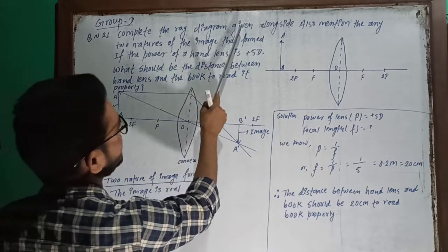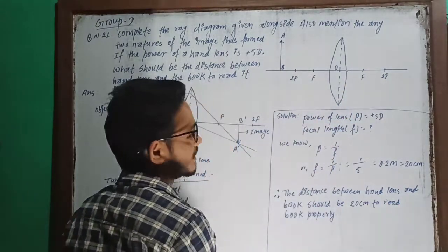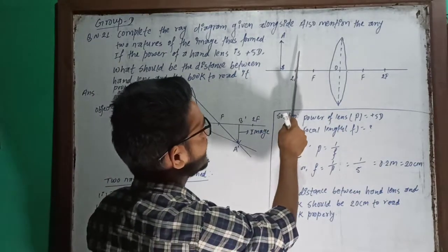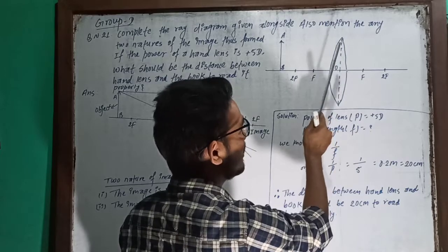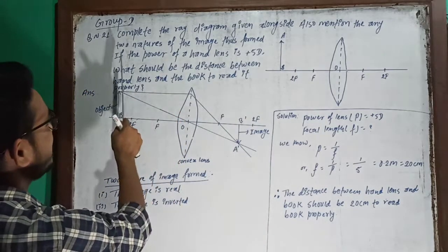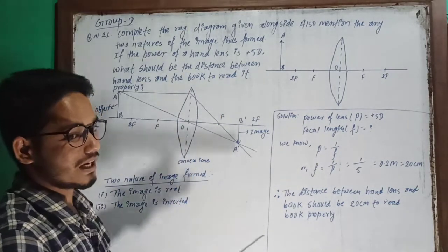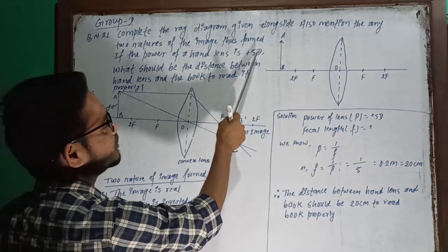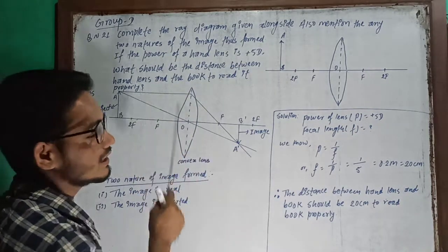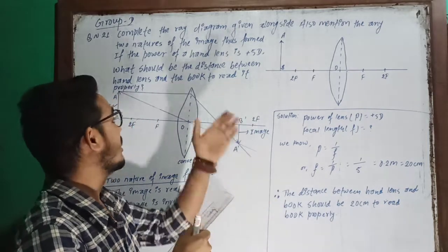The question is here: complete the ray diagram given alongside this figure. The first thing is complete. Also mention any two natures of the image. If the power of hand lens is 5 diopter, what should be the distance between hand lens and the book to read it properly?